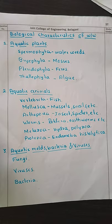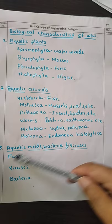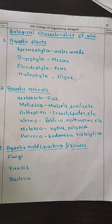We will now discuss aquatic molds, bacteria, and viruses. Fungi are unicellular organisms that survive in a pH range of around 4 to 10. The reproductive stage of fungi is through spores.